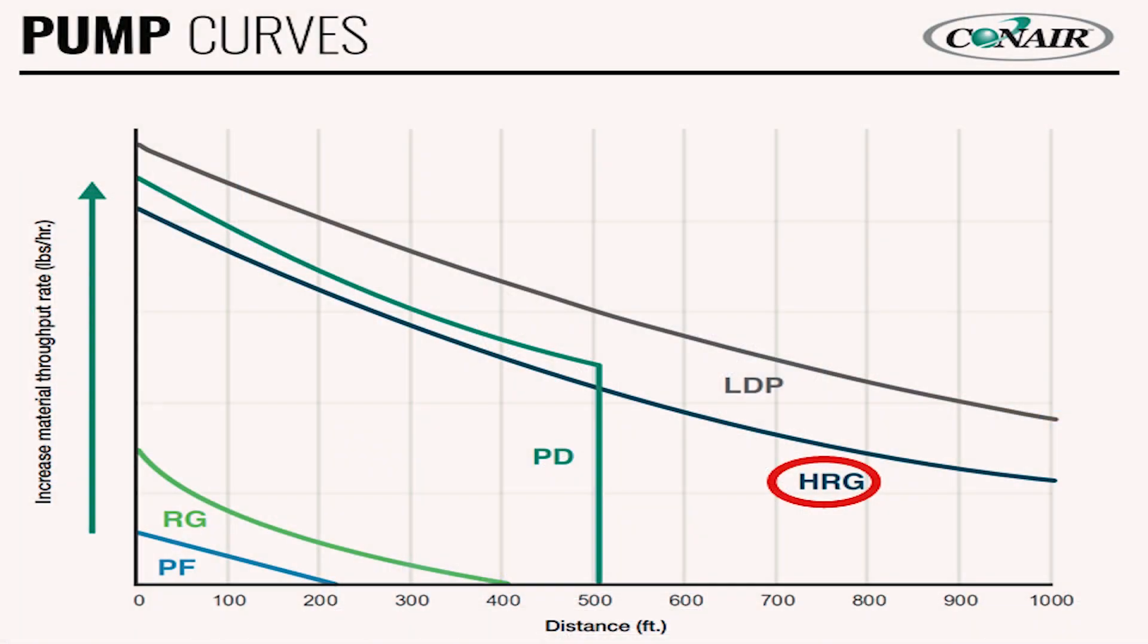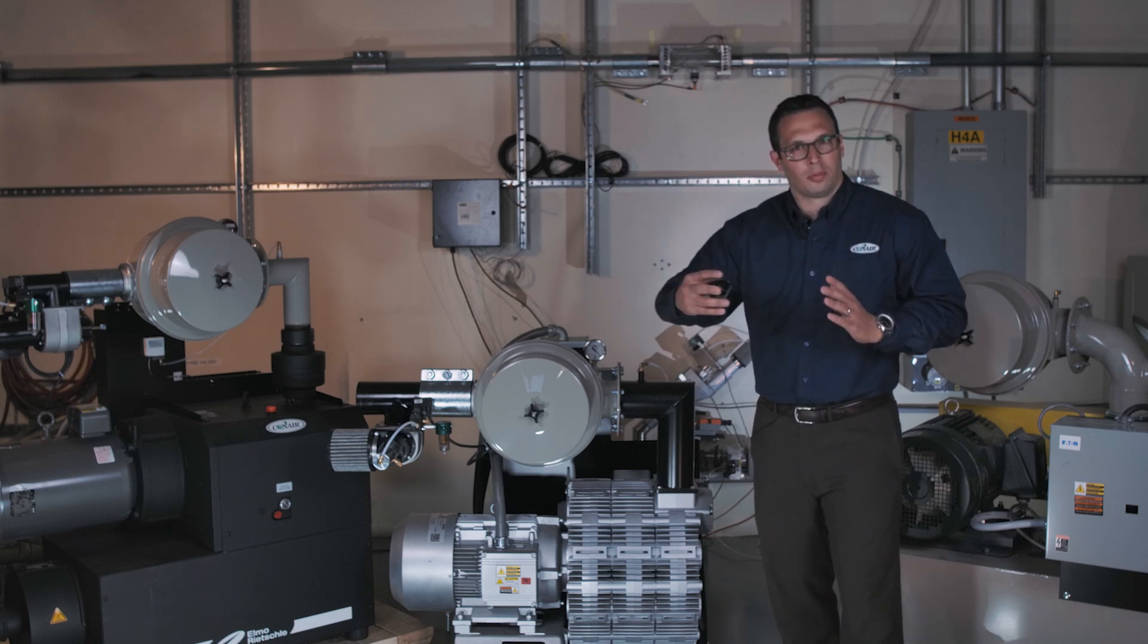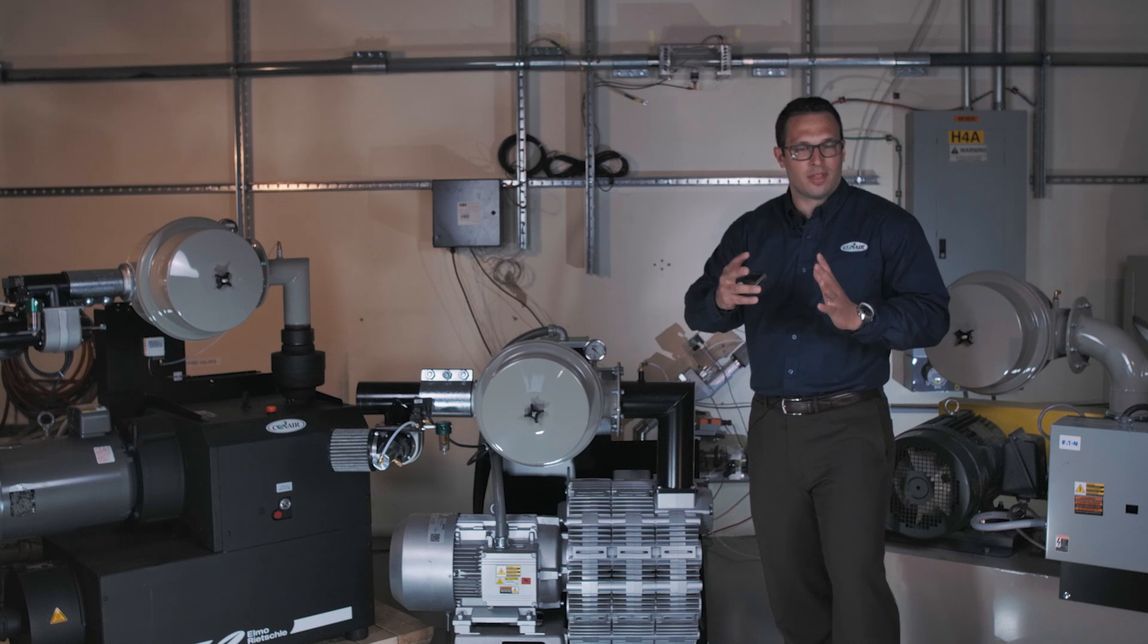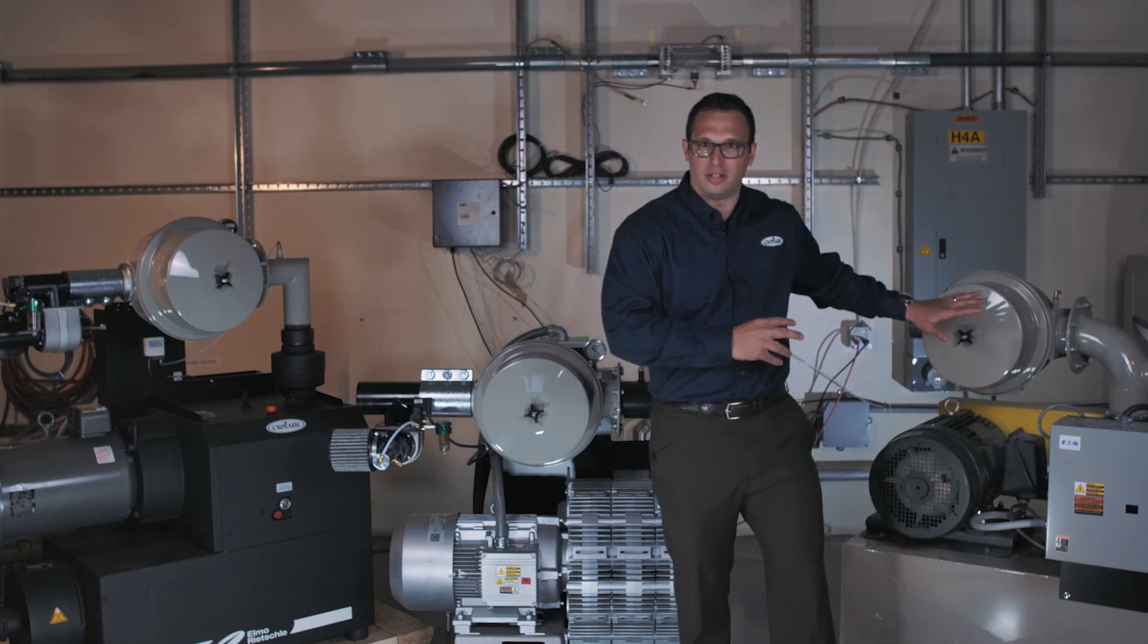As you can see on this pump comparison chart that we have here, I show PD, I show LDP, and I also show our new HRG pump, and see how the HRG pump now fits into this area where it's going to be for the longer distances. Again, the farther you convey, the more vacuum is required at that pump itself, the pump capability, to be able to keep that resin moving. Also notice on the throughput side of the curve, which will be the y-axis, the HRG and the positive displacement pumps almost mirror themselves. But then once that positive displacement pump runs out of vacuum capability, right at that 12 inches of mercury, we try not to go above that because the pumps themselves really are only capable of about 14 maximum.